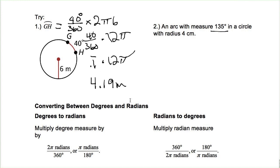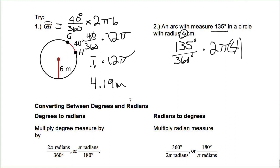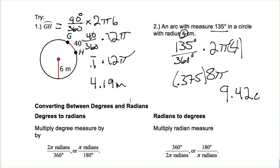Number two: the radius is 4. So arc length = 135/360 × 2π × 4, which is 8π times 135/360. 135 ÷ 360 = 0.375, times 8π gives approximately 9.42 centimeters.